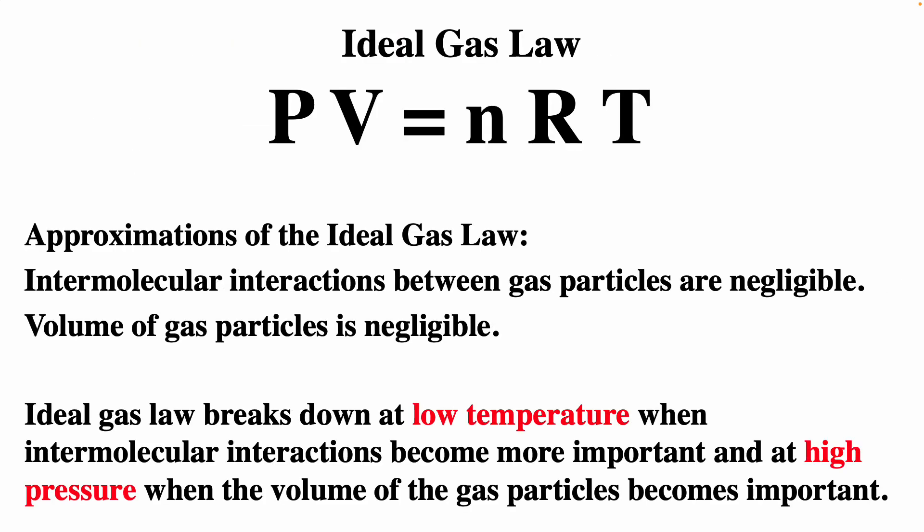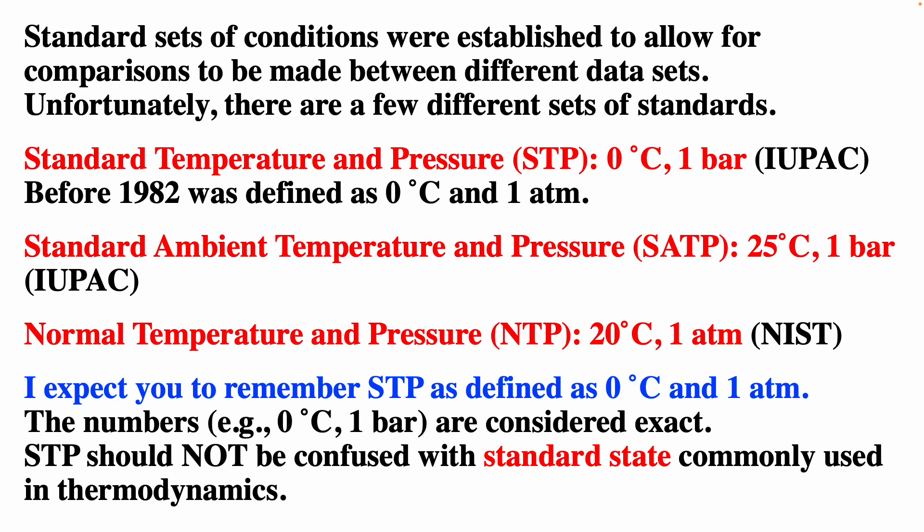The ideal gas law: PV = nRT — pressure times volume equals number of moles times gas constant times temperature. Temperature always has to be in units of Kelvin. When using the ideal gas law, we're assuming intermolecular forces between gas particles are negligible, and the volume of the gas particles is negligible.